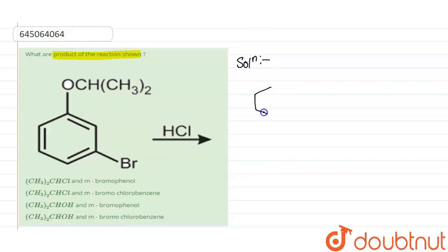So if we see this compound, we have OCH(CH3)2 and bromine. So it is clearly visible to us that it is an ether. And when it reacts with HCl, then this cleavage of this ether will occur.